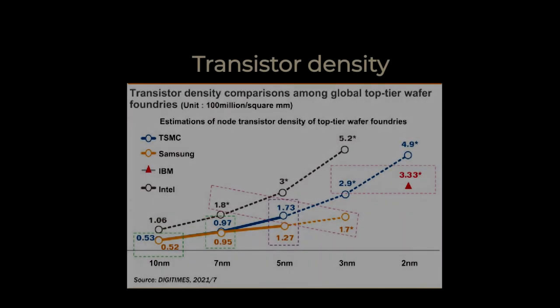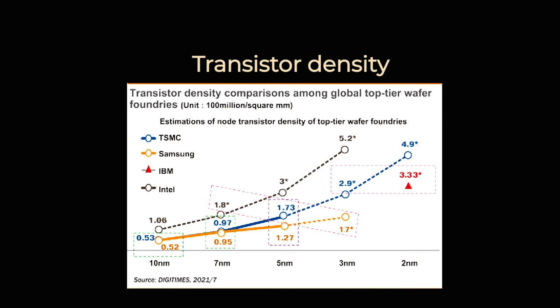But what does the nanometer in CPUs actually mean? Processors are made using billions of transistors. Originally, nanometer referred to a size of transistor. Nowadays, transistors can't easily be shrunk physically, but still this number refers to density per size of the die.